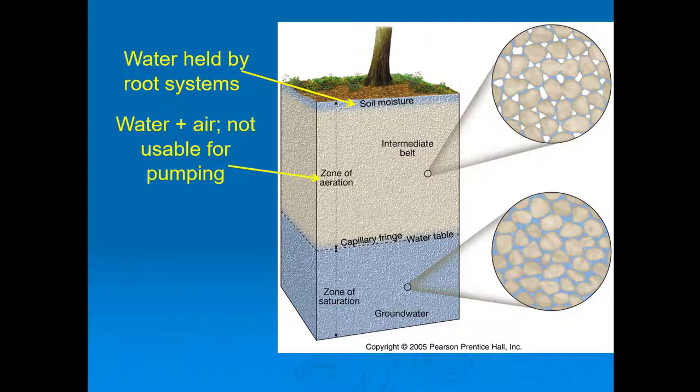In the zone of aeration, what is different from the zone of saturation is that between grains there is both air and water. If you've ever turned off the water in your sink or toilet for maintenance and then turned it back on, you probably remember that horrible hissing, screeching sound — that's because you're sucking out both water and air. You can't pump on a well that is in the zone of aeration. When wells go dry, it's because they're within the zone of aeration and you're just sucking out air between the particles — there's not a ton of water there.